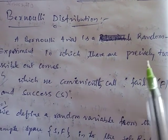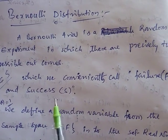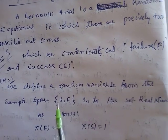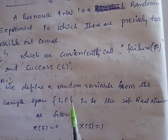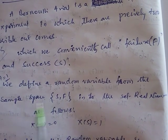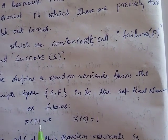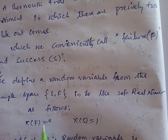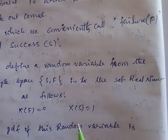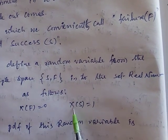A Bernoulli trial is a random experiment in which there are precisely two possible outcomes, which we call failure and success. We define a random variable from sample space S = {s, f}, where s is success and f is failure. X(f) = 0 (failure event), x(s) = 1 (success event). This is how we define the Bernoulli random variable.